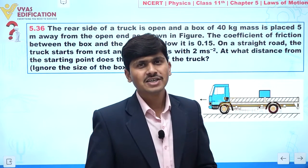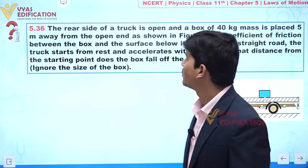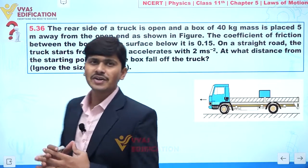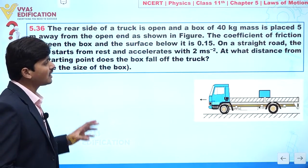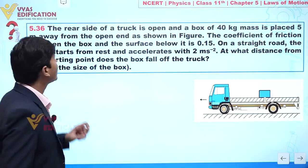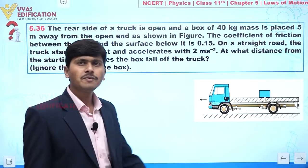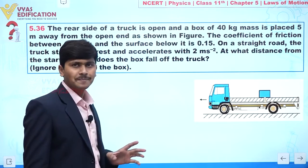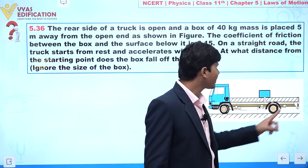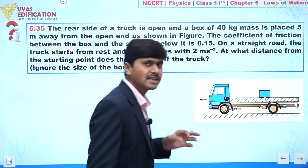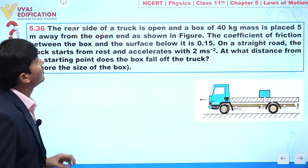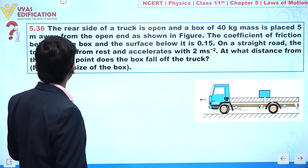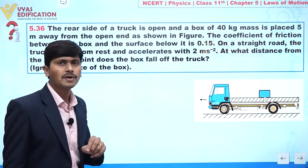We are going to discuss question number 5.36. In this question, the rear side of a truck is open. This is the truck and this is the rear side, which is open. A box of 40 kilograms is placed 5 meters away from the open end, as shown in the figure.